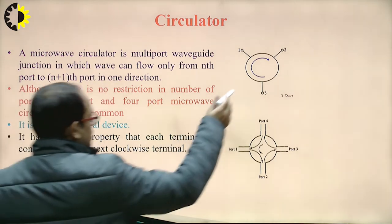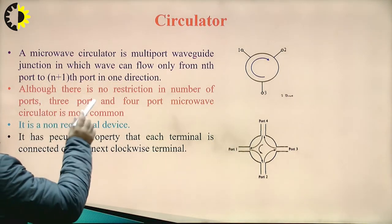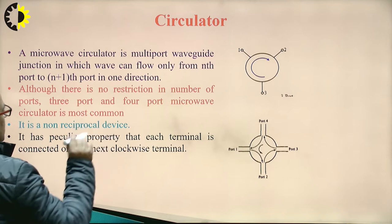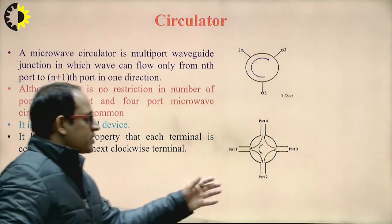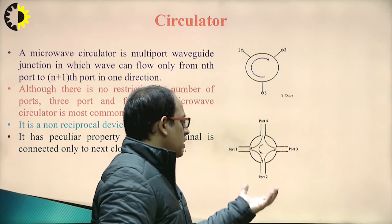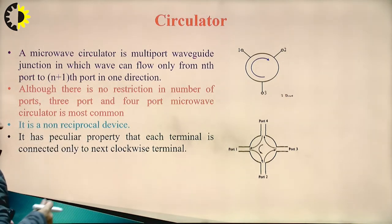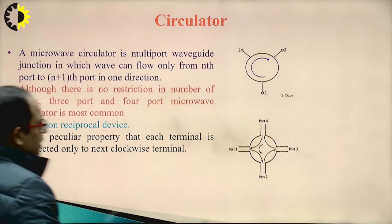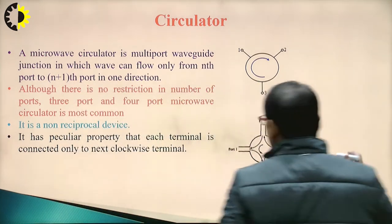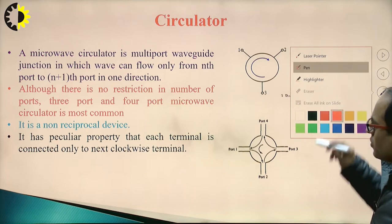The flow direction is generally anti-clockwise, although there is no restriction on the number of ports. Three-port and four-port micro circulators are the most common. The minimum number of ports is three and it can be up to n number of ports. The circulator is a non-reciprocal device — it has the property of non-reciprocity.